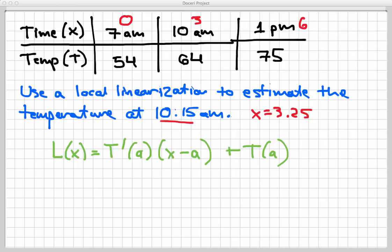Again, I'm using T because that's the name of my function, even though it says f in the definition, but what is this a value? Well, a is the point where we are attaching the tangent line. A has to be a known point. And which known point should I use? I have three of them to choose from.